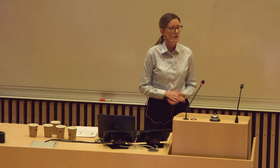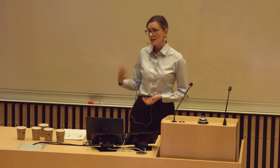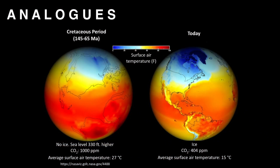To do this, we can use geology. We can look to the past as an analog, and today I'm going to take you back in time to about 145 to 65 million years ago — the Cretaceous period. At this time, carbon dioxide levels were 6 to 10 times higher than they are today, surface air temperature was 12 degrees Celsius higher than today, and there was no polar ice.